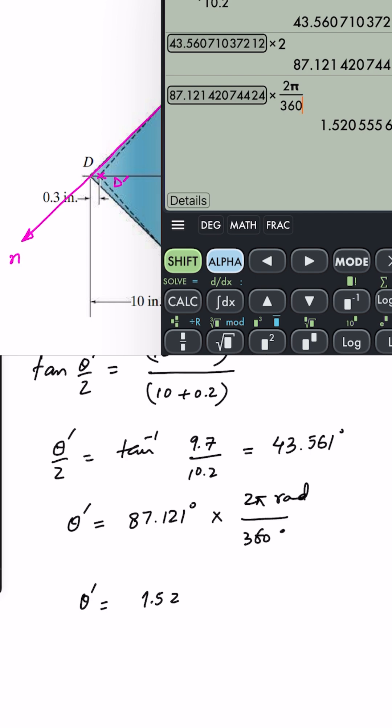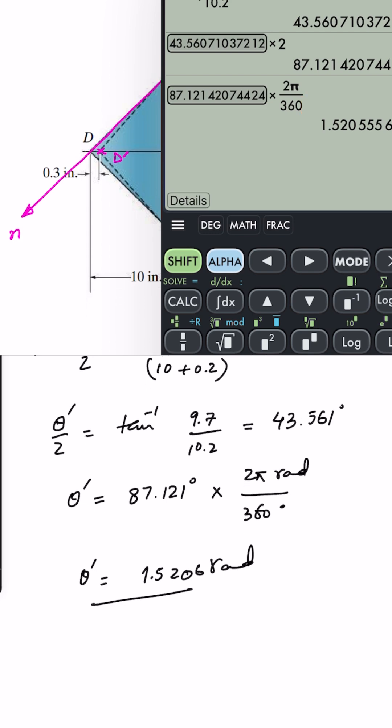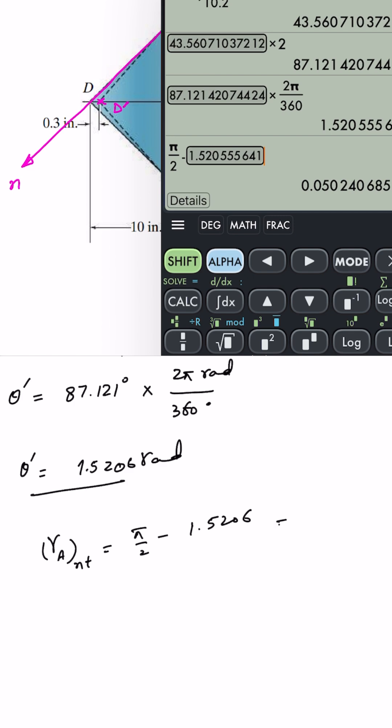Now putting it into that equation, we will get gamma at A along the n and t is pi divided by 2 minus 1.52060, which equals 0.0502 radians.